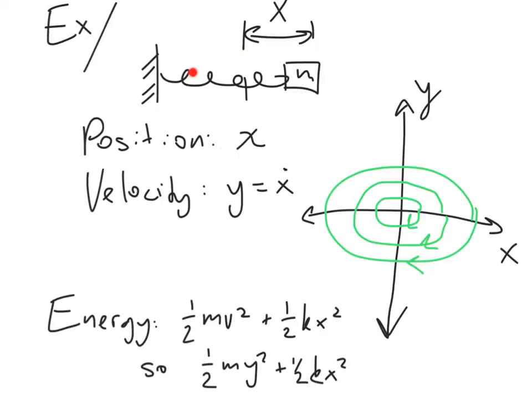Here's an example, a classic one. We have a spring with mass m, a linear spring with some displacement distance. Its position is x, and its velocity is x dot, which we're calling y.